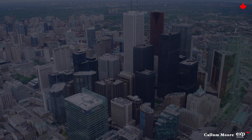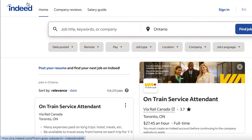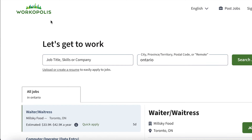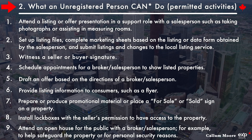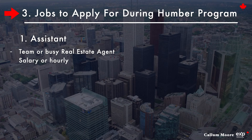What type of jobs can you get as an unregistered salesperson? I'm only going to cover three, but first, where to find them. If you're searching online, I used Indeed or Workopolis — two really good ones, though there are more. You can also reach out directly to local brokerages around you or even successful agents or teams. First would be an assistant — an assistant for a team or a really busy real estate agent. Essentially you'll be doing what's on that first permitted list. It might be a salary or an hourly rate, and you may have a list of tasks every day or just be on call.